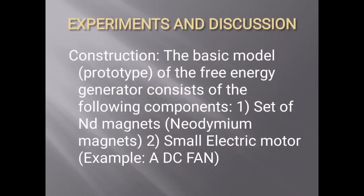Experiment and Discussion. Construction: The basic model prototype of the free energy generator consists of the following components. One: a set of ND (neodymium) magnets. Second: small electrical motors, e.g., a DC fan.